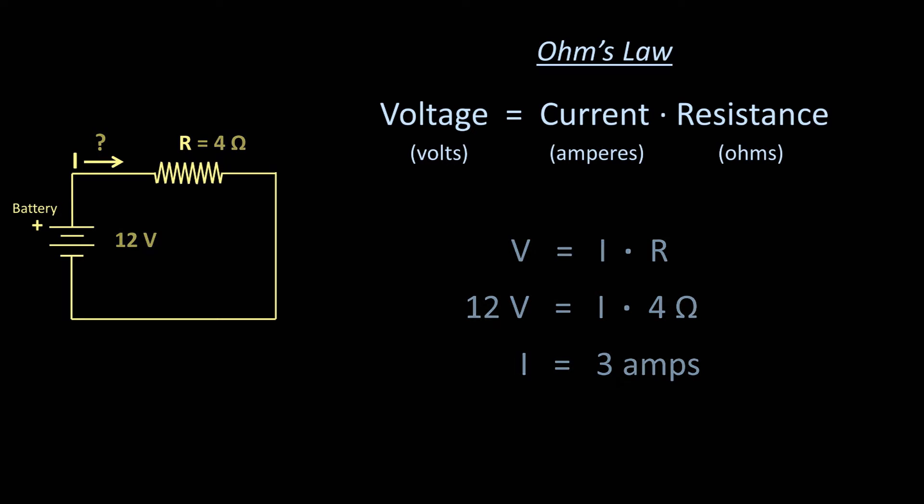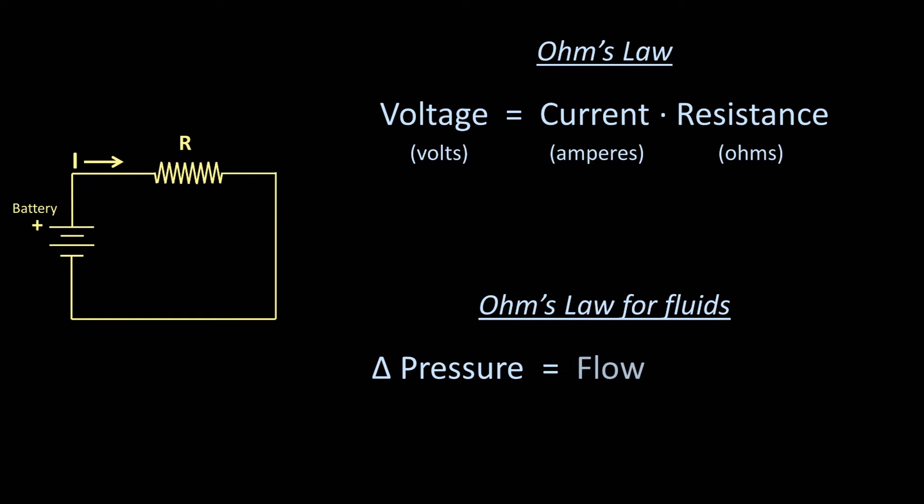But how do we apply this same concept to fluids? In fluids, voltage, which is the difference in electrical potential in electricity and magnetism, is replaced by the difference in pressure between two points. Current, which is nothing more than the flow of charge, is replaced by fluid flow, and resistance is left as resistance.